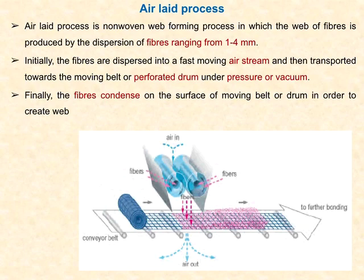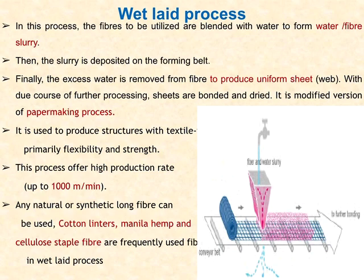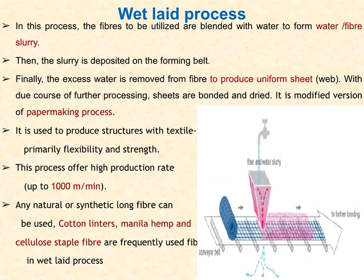In the wet lay process, the fibers are mixed with water to form a water-fiber slurry. Water and fiber are mixed together and spread onto the surface. The slurry is deposited on the forming belt, and then the excess water is removed from the fiber to produce a uniform sheet. With further processing, the sheets are bonded and dried. It is a modified version of the papermaking process, used to produce structures with textile fabric flexibility and strength.